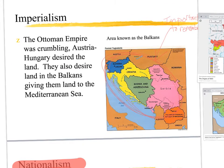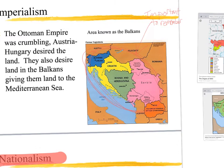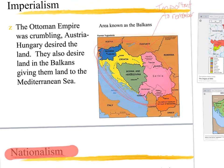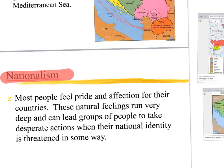There's all sorts of tension created by imperialism. This territory — it's called the Balkans — is going to be important to remember. People are going to want to take over this area in southeastern Europe. I'm going to come back to that later.